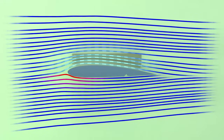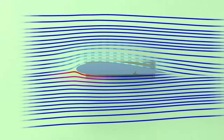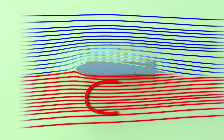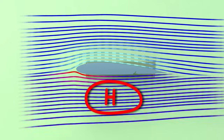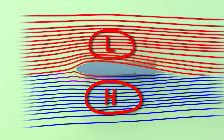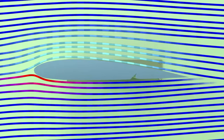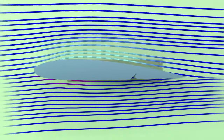This imbalance in pressure is called a pressure gradient. Wings are designed to create this kind of pressure gradient, because air always moves from areas of high pressure to areas of low pressure.